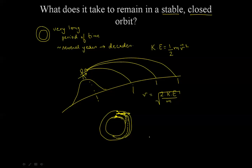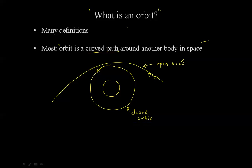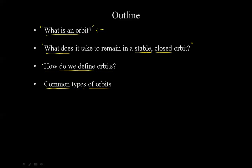Today we saw what it takes to remain in a stable closed orbit. Next time, we'll answer the third question: how do we define orbits? For now, this is it. Thank you.